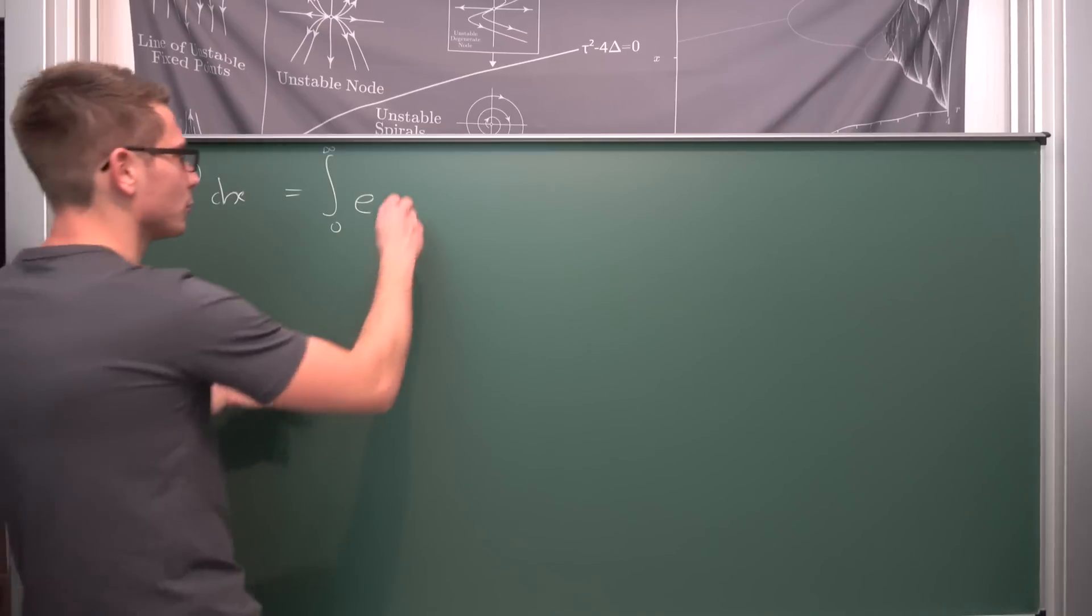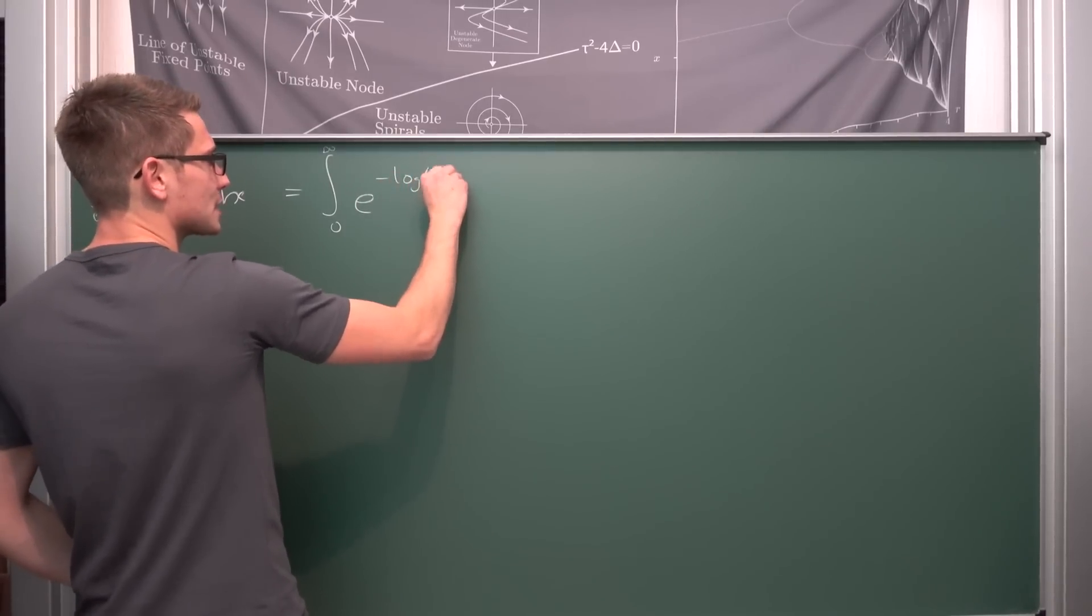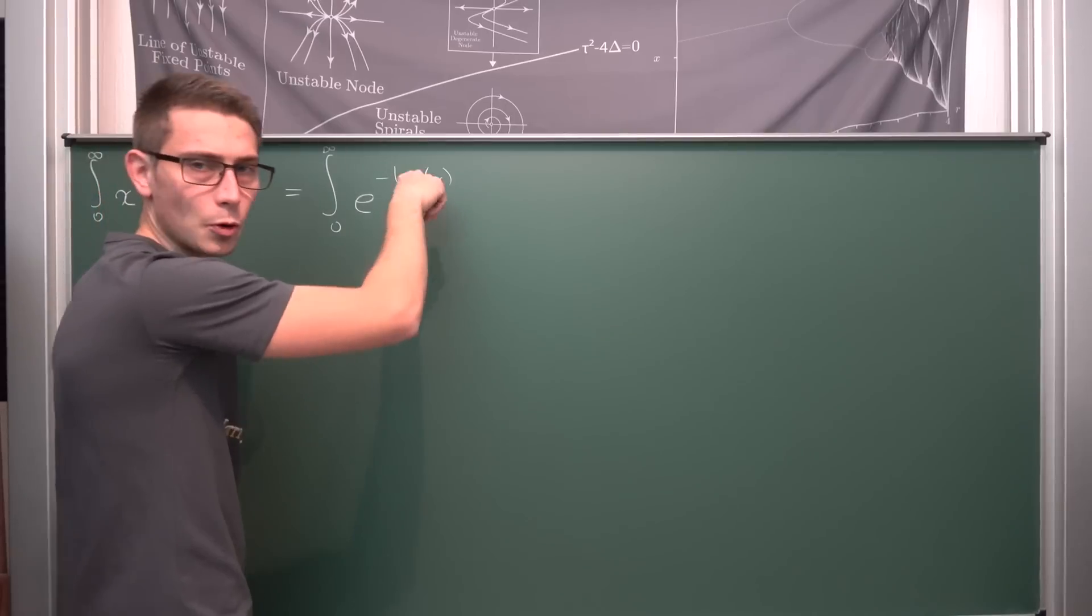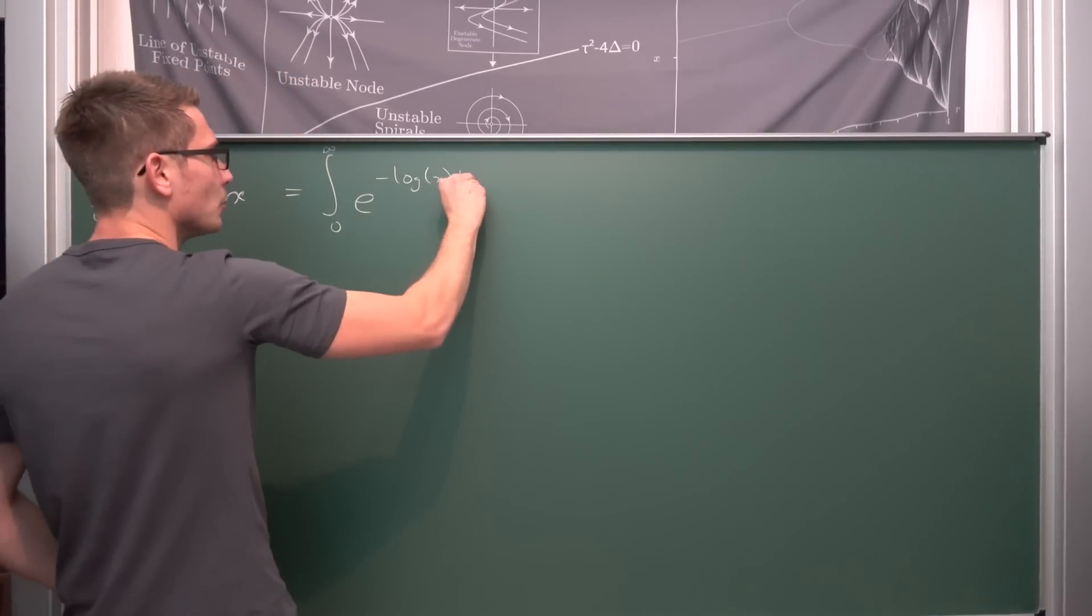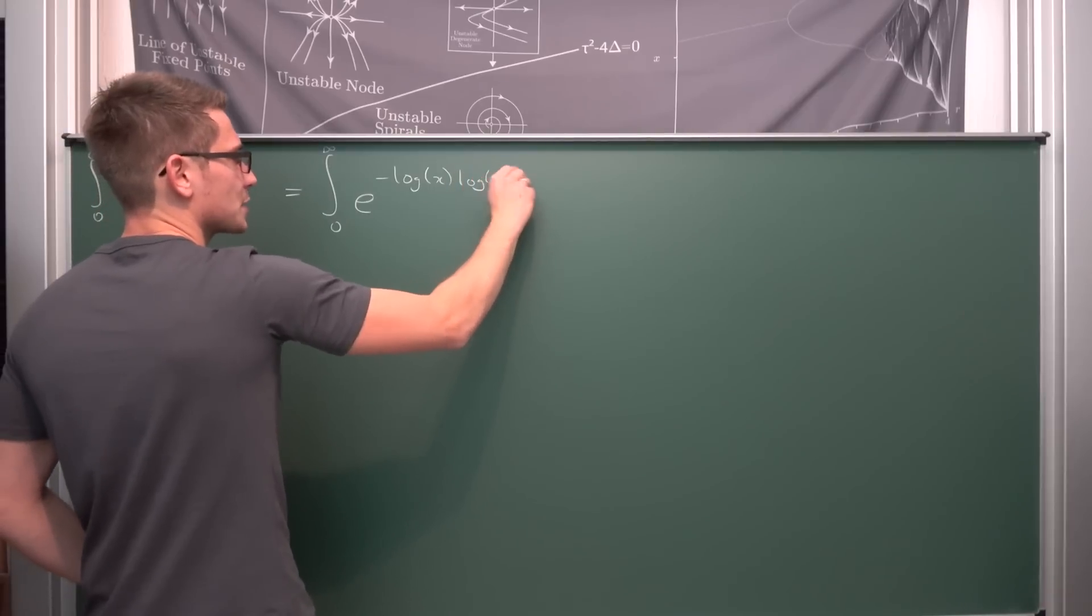We're going to rewrite this as e to the natural log of x to the negative log of x. Bring the negative log of x to the front as the exponent, using the exponent properties of our logarithm.